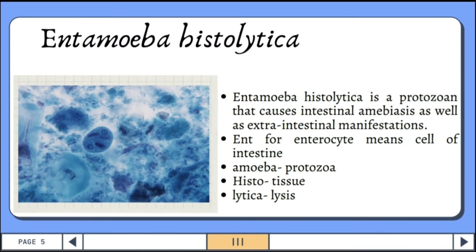Entamoeba histolytica is a protozoan that causes intestinal amoebiasis as well as extraintestinal manifestation. The name breaks down as: Ent (enterocyte) means cell of intestine, amoeba means protozoa, histo means tissue, and lytica means lysis.